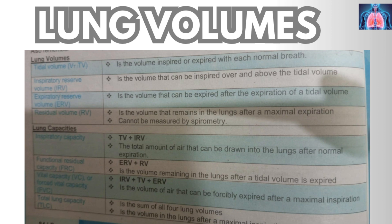First, let's talk about lung volumes. As you can see in the diagram, there is a tidal volume, an inspiratory reserve volume, an expiratory reserve volume, and the residual volume. The tidal volume is the volume inspired or expired with each normal breath. The inspiratory reserve volume is the volume that can be inspired over and above the tidal volume. The expiratory reserve volume is the volume that can be expired after expiration of a tidal volume. The residual volume is the volume that remains in the lungs after maximal expiration — and this volume cannot be measured with spirometry.